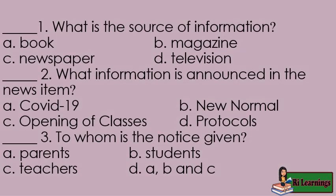Question one: what is the source of information? A) book, B) magazine, C) newspaper, D) television. Question two: what information is announced in the news item? A) COVID-19, B) new normal, C) opening of classes, D) protocols. Question three: to whom is the notice given? A) parents, B) students, C) teachers, D) A, B, and C.